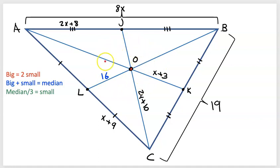I'm going to work my way from the inside out. Looks like I have LO is 16, so if this is 16, OB would be double that so you would have to be 32. I have OK right here, it looks like it's x plus 3. If OK is x plus 3, this is the big guy, that would be double, so that would be 2x plus 6.